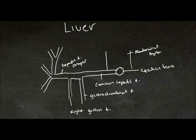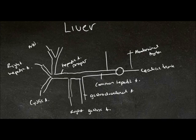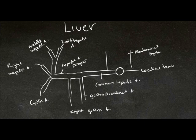And this branches again into the cystic artery, which supplies the gallbladder, the right hepatic artery, the middle hepatic artery, and the left hepatic artery. These arteries go to supply oxygen-rich blood to the lobes of the liver.